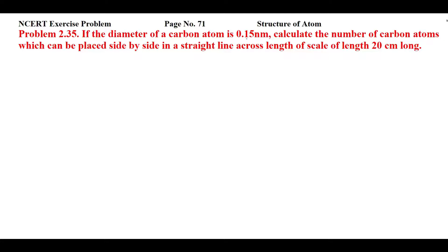In this question, the diameter of the carbon atom is given as 0.15 nanometer. The carbon atoms are to be placed side by side in a straight line, and this straight line should have a length of 20 centimeter. We have to determine how many carbon atoms are present in a straight line 20 centimeter long. We will apply the unitary method here.